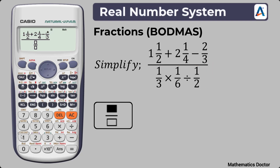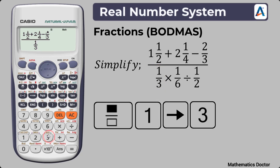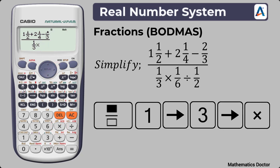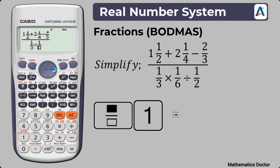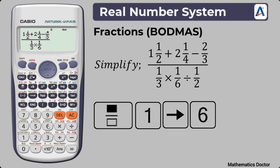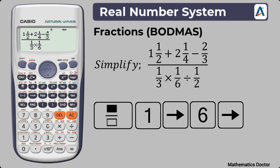Since the fractions in the denominator are also fractions on their own, press the fraction key. The first fraction is 1 over 3, so press 1 over 3. Now press the right arrow to take the indicator to the side of the fraction, then press the multiplication sign. Enter the next fraction by pressing the fraction key and inputting 1 over 6. Press the right arrow key to move the indicator to the side of that fraction, then press the division sign.